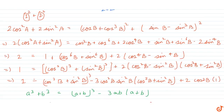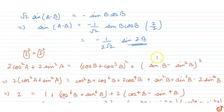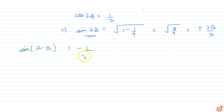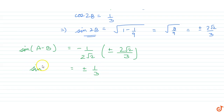What we have to find is sin(a − b). Substituting the value of sin(2b) into our earlier equation: sin(a − b) = −(1/(2√2)) × (±2√2/3) = ±1/3. Therefore sin(a − b) = ±1/3 is the final answer.